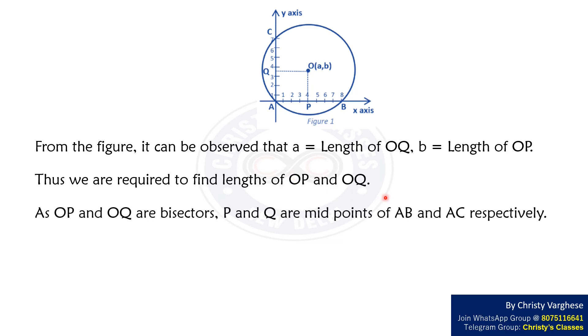As OP and OQ are bisectors, P and Q are the midpoints of AB and AC respectively. Hence, AP equals 8 by 2 that is 4 units and AQ equals 7 by 2 that is 3.5 units.